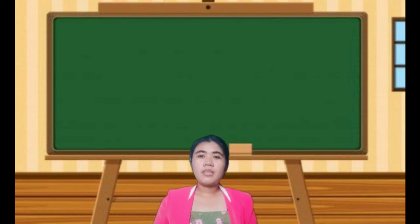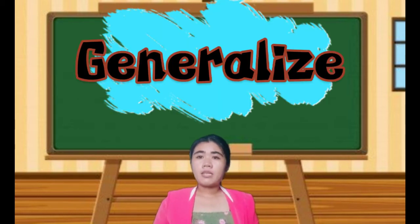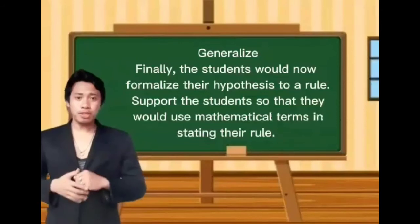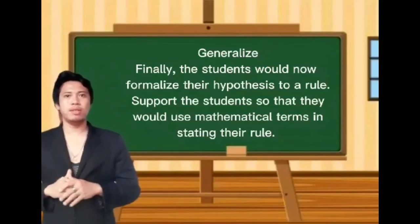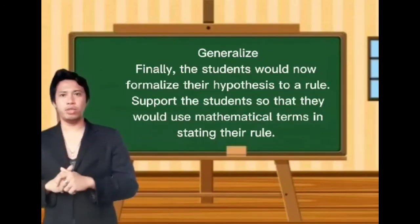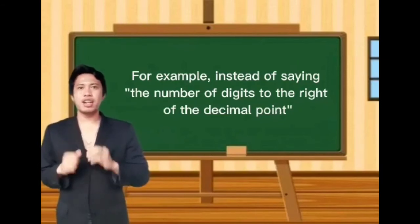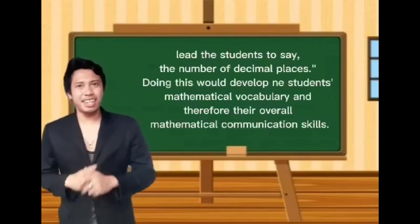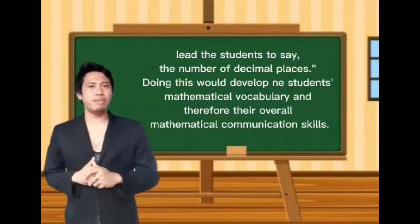The fourth process, generalize, will now be discussed. Finally, the student formalizes their hypothesis into a rule. Support students so that they use mathematical terms in stating the rule. For example, instead of saying 'the number of digits to the right of the decimal point,' lead the student to say 'the number of decimal places.' Doing this develops students' mathematical vocabulary and their overall mathematical communication skills.